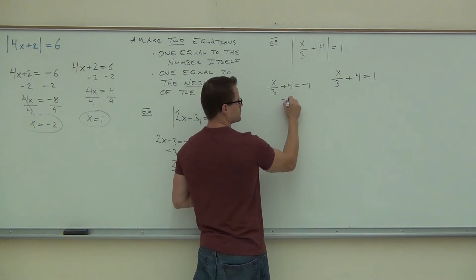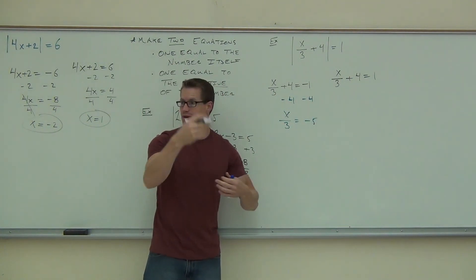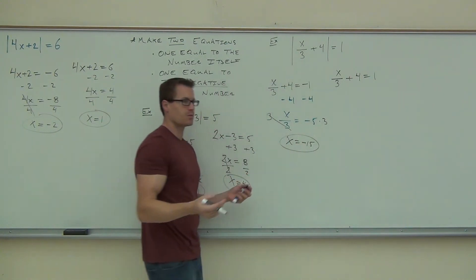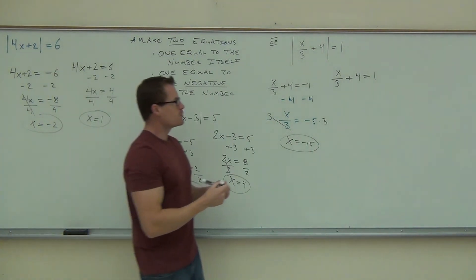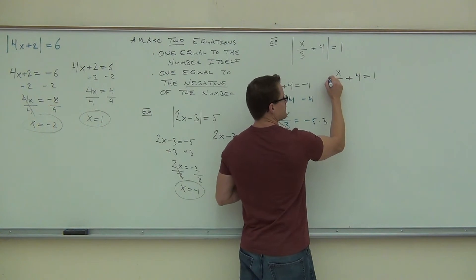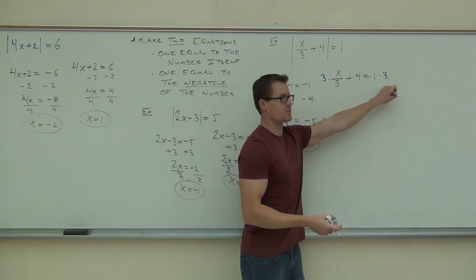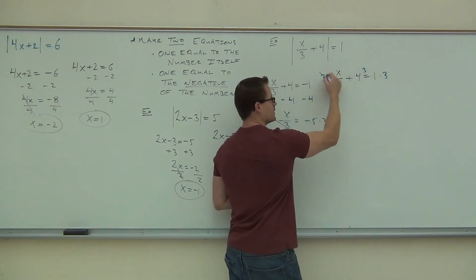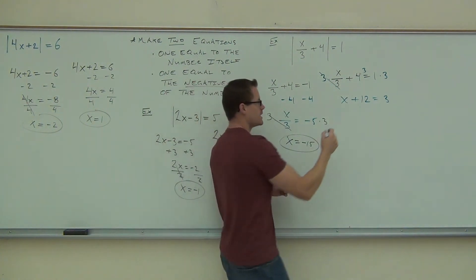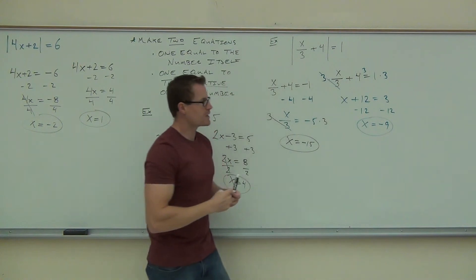Let me do one each way so you see the difference. First way: if you subtracted 4 first, you'd get x over 3 equals negative 5, and then multiply both sides by 3 to get one solution. The other way: multiply by 3 first — that's the LCD idea from Chapter 7. You've got to do it appropriately, meaning this term, this term, but also this one right here. If you multiply everything by 3, you get x plus 12 equals 3. Do you see the difference? Then if we subtract 12, would you get negative 9? Yes. Either way, we should get the same answers.